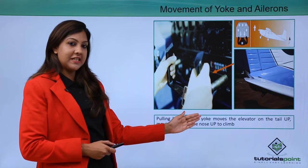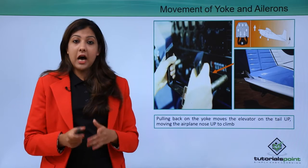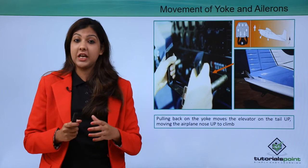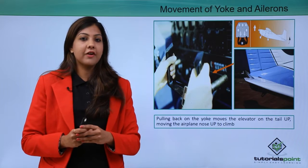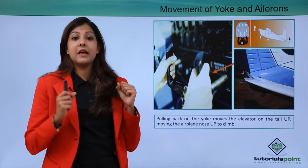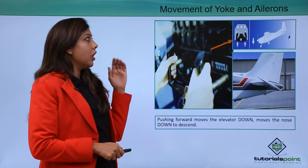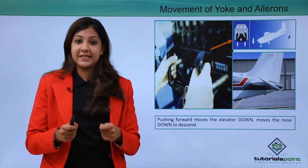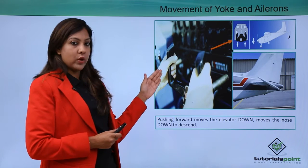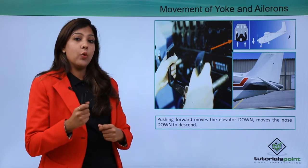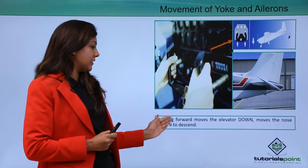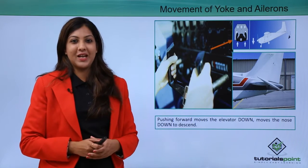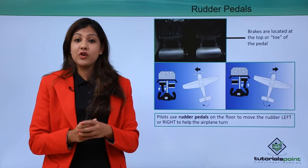Pulling back on the yoke moves the elevator on the tail up, which raises the airplane's nose and helps the aircraft climb. This is the technique used by the pilot during takeoff on the active runway. If you want to descend into approach and landing, you push the yoke forward, which turns the elevator down and moves the nose down to descend.